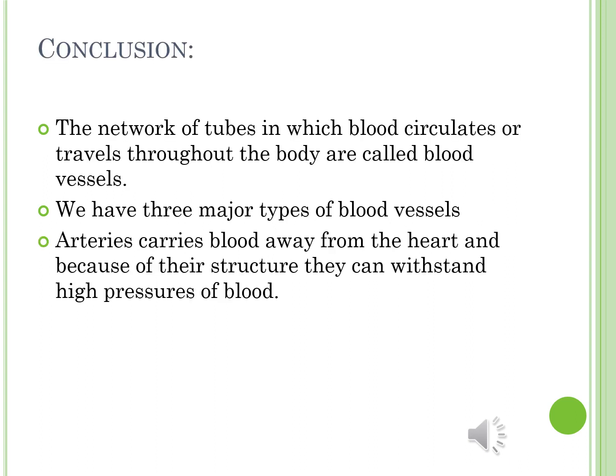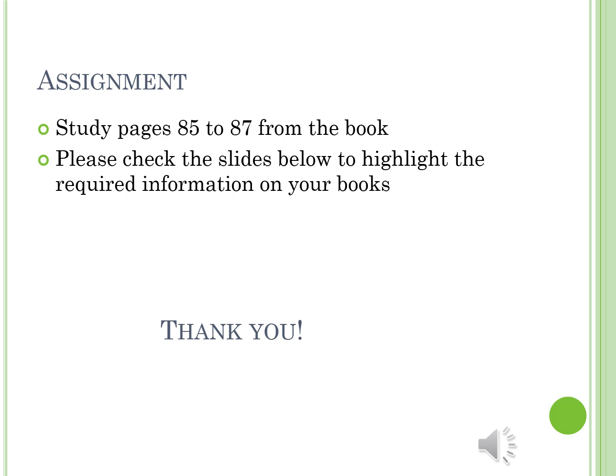As a conclusion for today, the network of tubes in which blood circulates or travels throughout the body are called blood vessels. We have three major types of blood vessels, one of them being the arteries. Arteries carry blood away from the heart, and because of their structure, they can withstand high pressure of blood. As an assignment for next time, please study pages 85 to 87 from your book, and check the slides below to highlight the required information on your books.